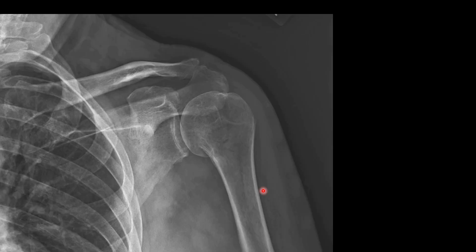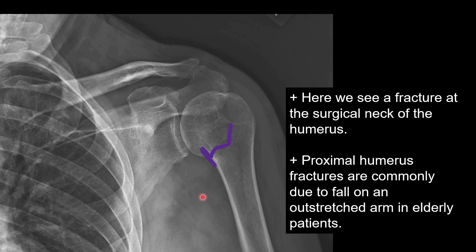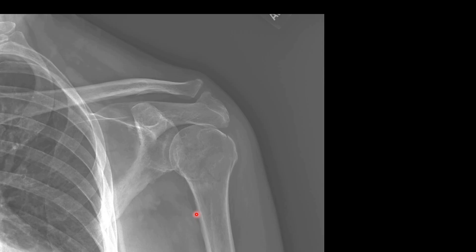Here's another patient who presented with shoulder pain following a trauma. If we follow the contours of the humeral head, we can see that there is a fracture of the surgical neck. These proximal humeral fractures are commonly due to falls on an outstretched arm in elderly patients. Anytime we have one fracture, we should always be searching for more. On this view, we also get a good look at the greater tubercle and can see extension of the fracture to the greater tubercle.